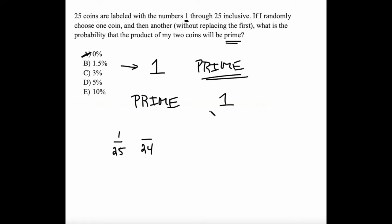2—don't forget that 2 is a prime number. 3, 5, 7, not 9, 11, 13, 17, 19, and 23. So that's 9 prime numbers that I have here.